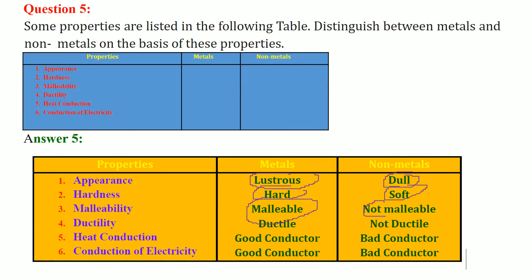Malleability: metals are malleable, non-metals are non-malleable. Ductility: metals are ductile, non-metals are non-ductile. Heat conduction: metals are good conductor, non-metals are bad conductor.